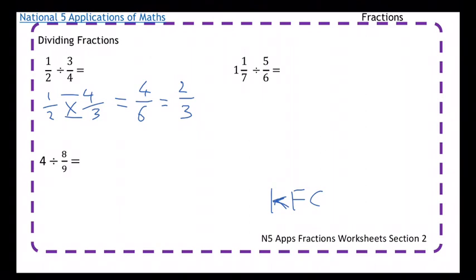Next one, we'll do 4 divided by 8 over 9. So remember, 4 means 4 over 1 divided by 8 over 9. Now I'm going to do my keep, flip, change.